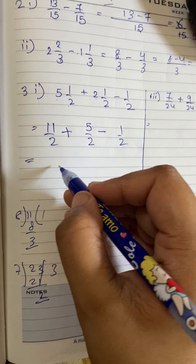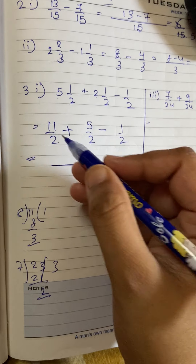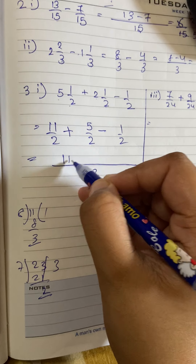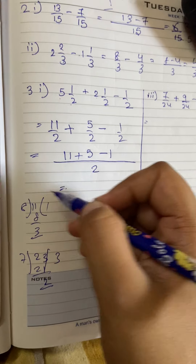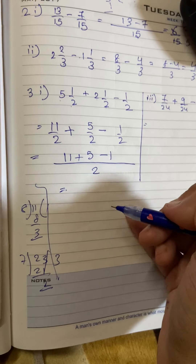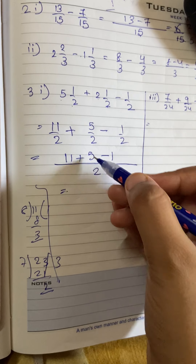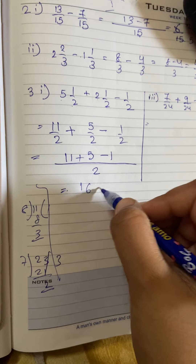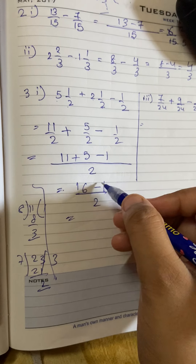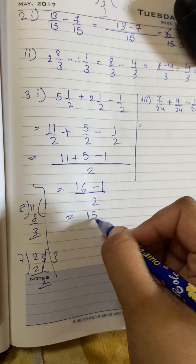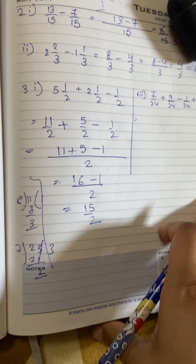Now draw a common line for all three. It becomes 11 plus 5 minus 1, all over 2. Step by step: 11 plus 5 is 16, then 16 minus 1 by 2 gives 15 by 2.